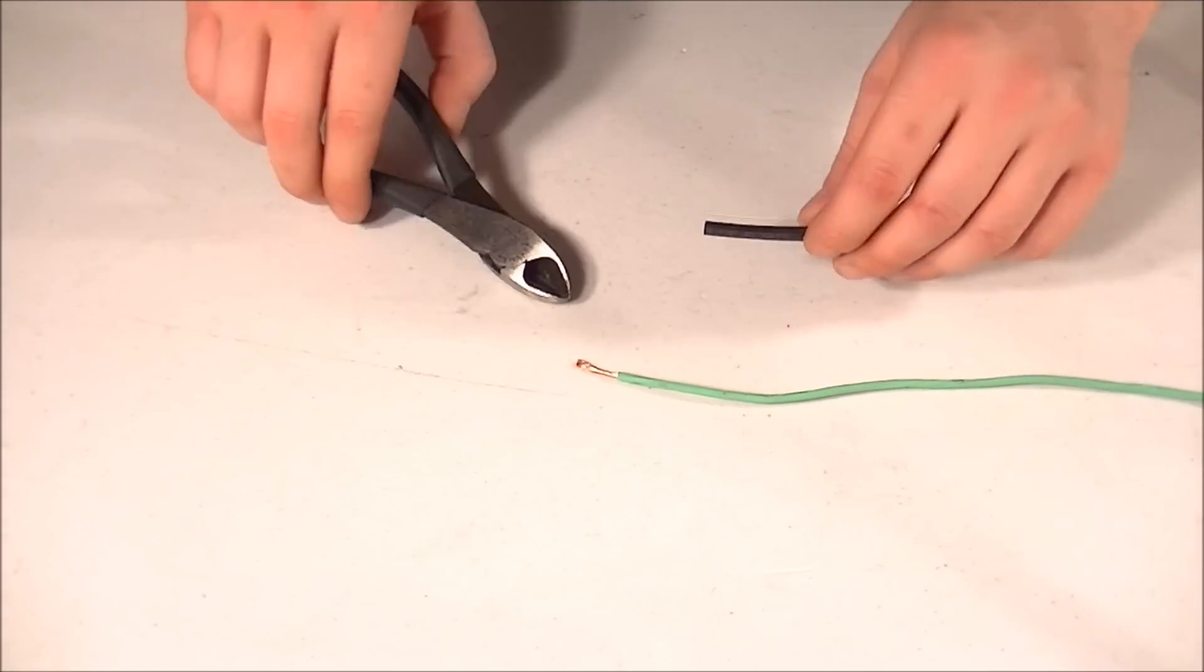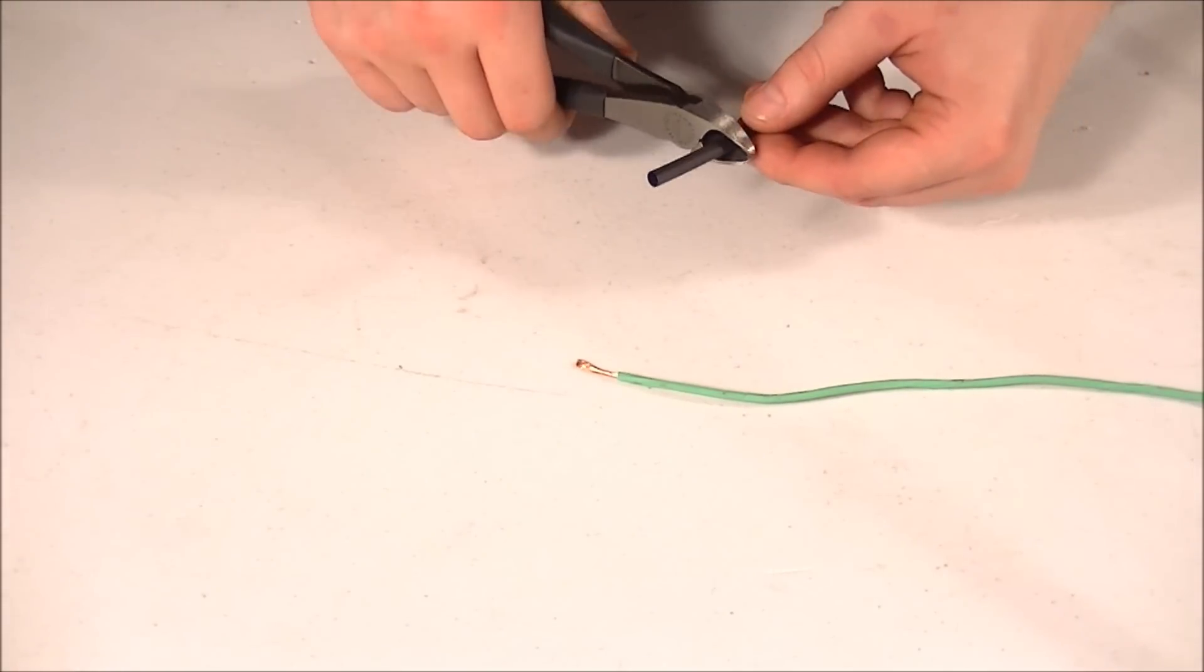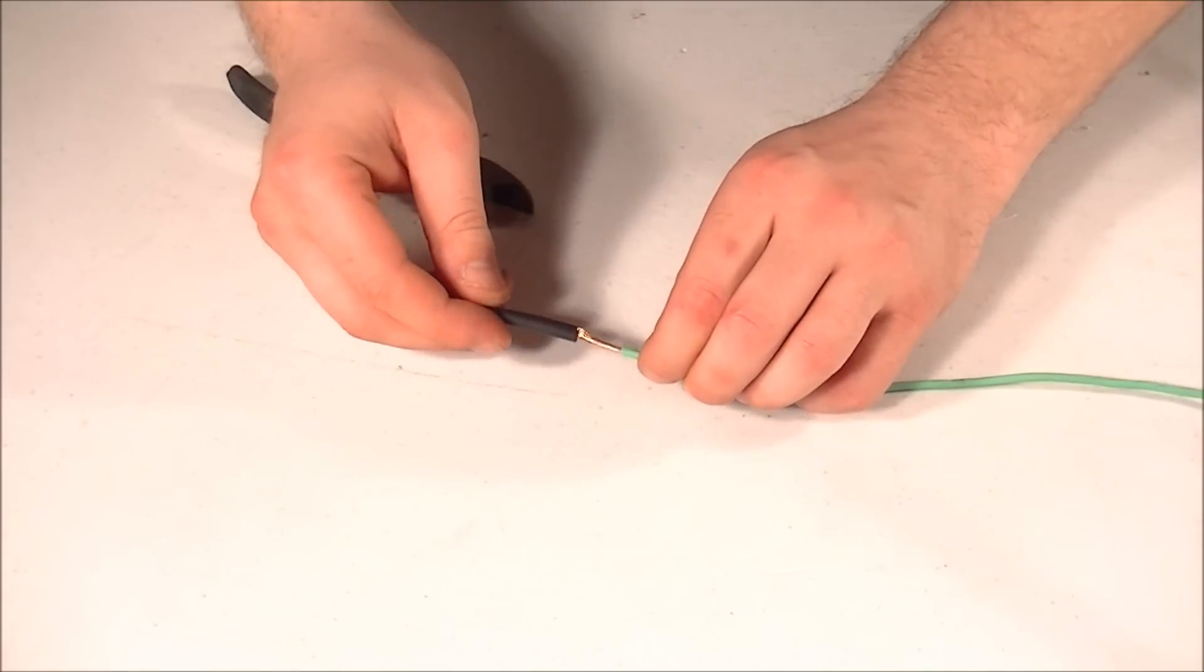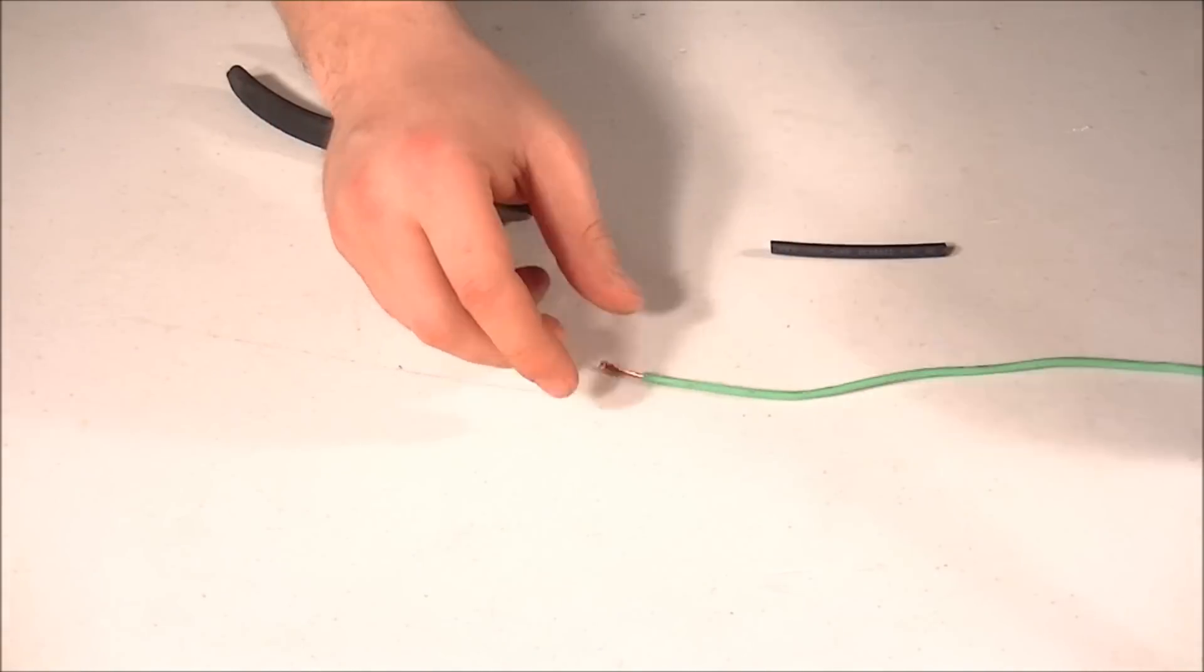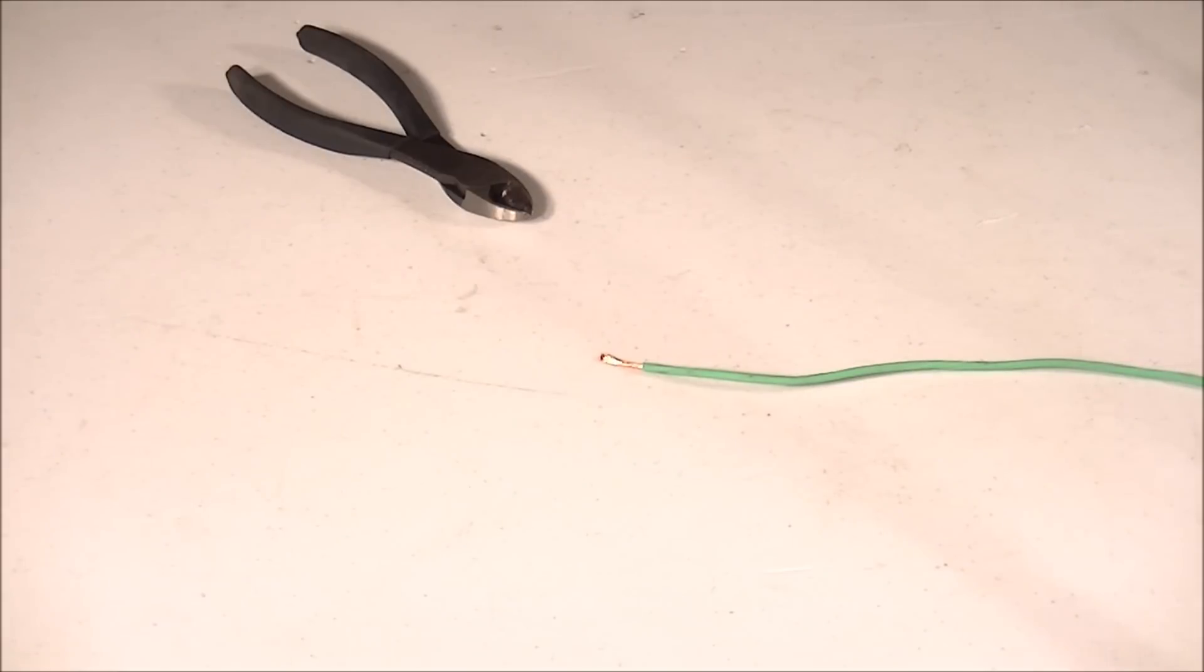Now use the wire cutters to cut a piece of heat shrink tubing to about one inch long. Slide it down the wire as far away from the point of solder as possible. This will prevent the heat shrink from activating prematurely from the heat produced by soldering.